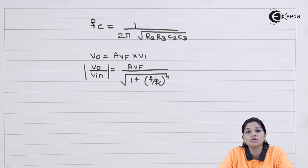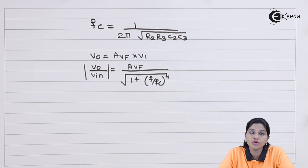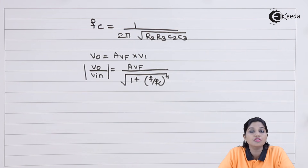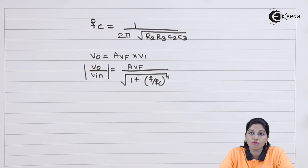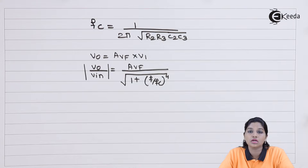This concludes the topic of the second order Butterworth low pass filter. I hope you understood that it is obtained by adding an additional RC network to the first order filter. Thank you very much for watching this video. Stay tuned to Ikira, subscribe to Ikira. Thank you.